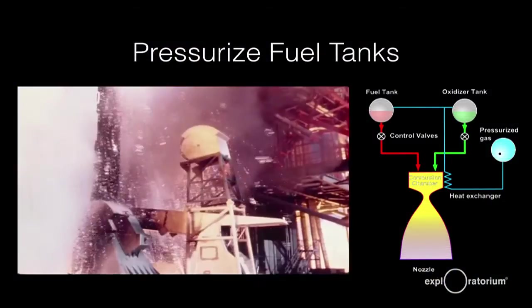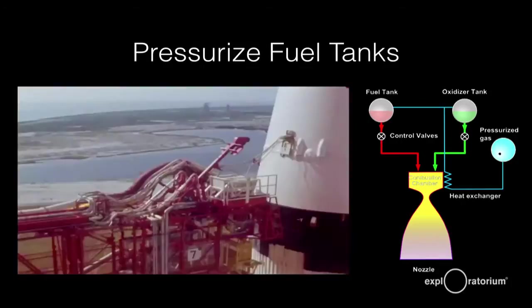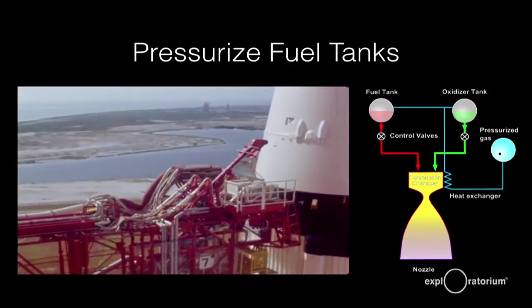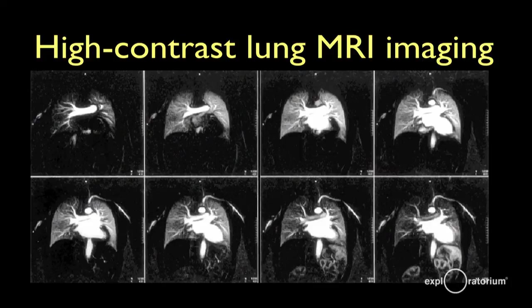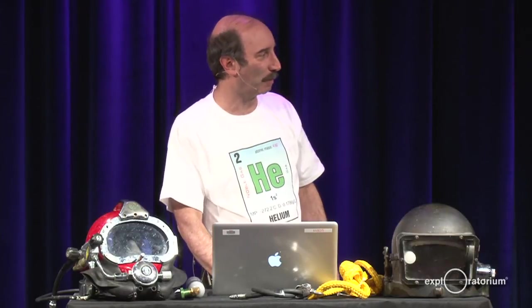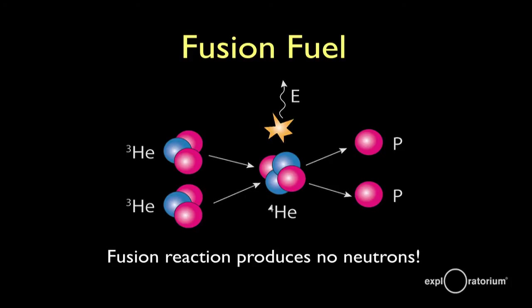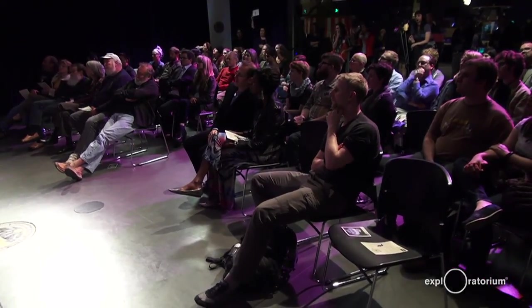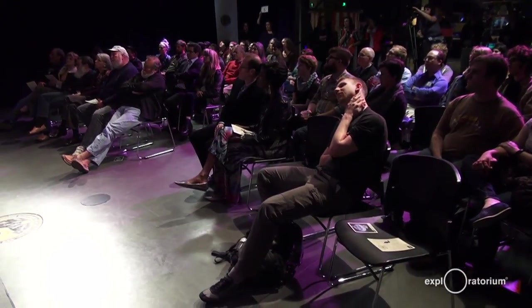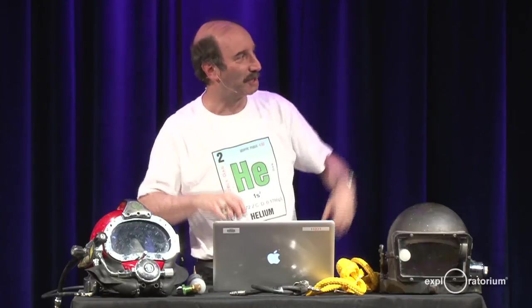Helium is also used to pressurize fuel tanks in rockets — this inert gas pressurizes the tanks and pushes the fuel into the rocket engine. You can also use helium-3 to take super-resolution MRI; here are some lung MRIs taken with helium-3. Helium-3 could also be used as a fusion fuel — if you use helium-3 instead of hydrogen, you get helium-4 as part of the reaction plus a couple of hydrogen atoms, and no excess neutrons. This matters because neutrons in normal fusion make the reactor structure radioactive; using helium-3 would prevent that.